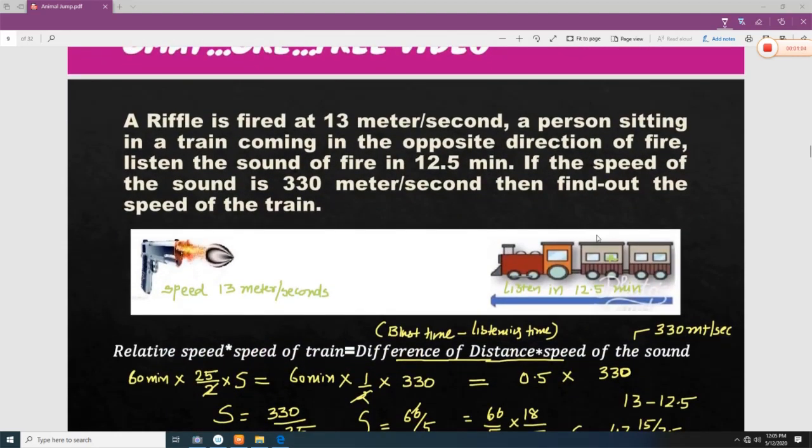A rifle is fired at 13 meter per second. So the speed is 13 meter per second. A person sitting in a train which is coming in the opposite direction of the fire. So fire is going in this way and train is coming in this way, opposite direction of the fire. Listen the sound in 12.5 minutes. So this passenger is listening the sound in 12.5 minutes.